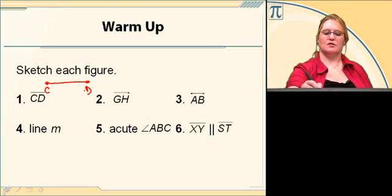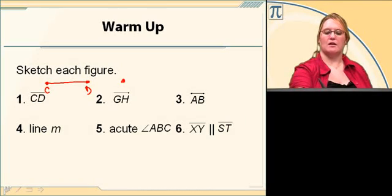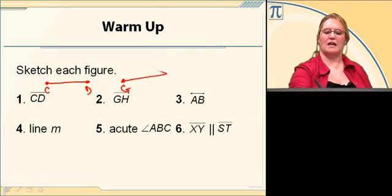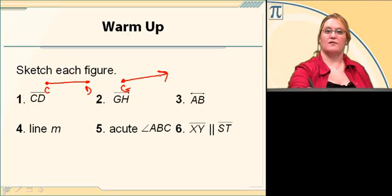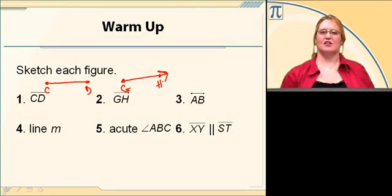Now let's look at number two, which is ray GH. So I need a point, label it G, draw a line with an arrow out. Next to your arrow, in front of it to the left side, put a point, label it H, and there's ray GH.